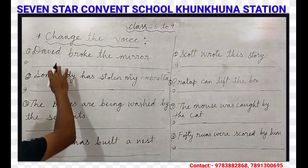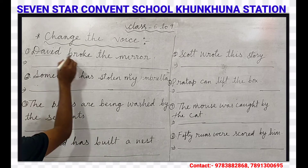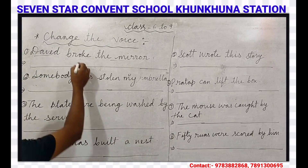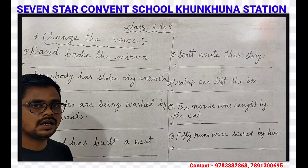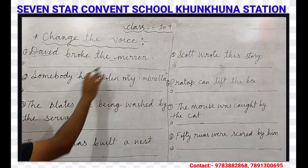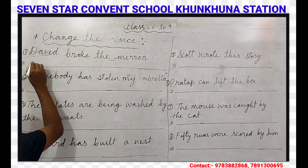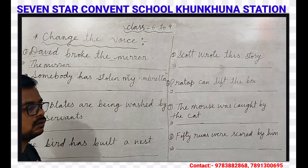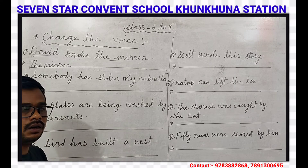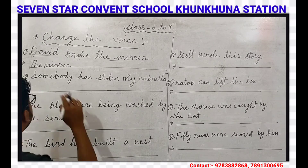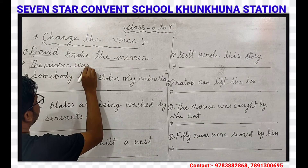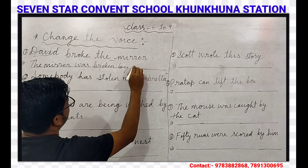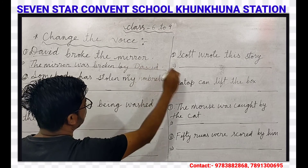Our first question is: David broke the mirror. Here David is the subject and the mirror is the object. It is in simple past tense because the main verb 'broke' is in second form. Subject and object will change their places. The mirror is singular, so we will use 'was.' The mirror was broken by David.